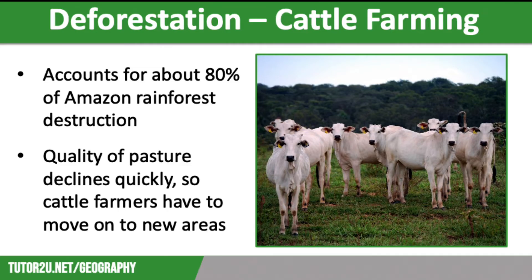Farming is also extremely damaging to the rainforest. Huge areas of land are cleared for cattle ranching, which accounts for around 80% of destruction in the Amazon rainforest. This is mainly to supply higher income countries with beef, as well as large food-based TNCs. Cattle need large areas to graze, but the quality of the pasture declines fairly quickly, meaning that farmers have to move their herds onto new areas, which therefore clears even more land.